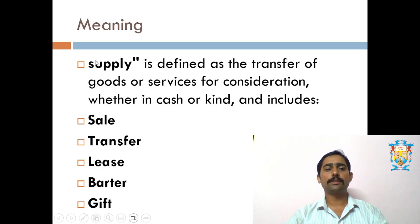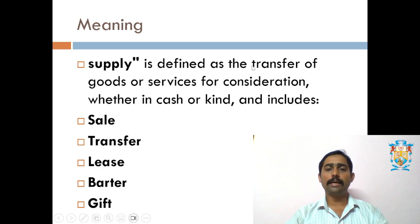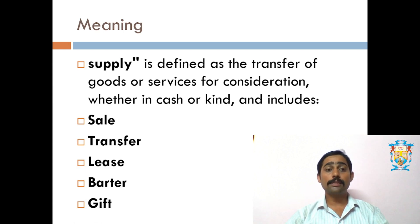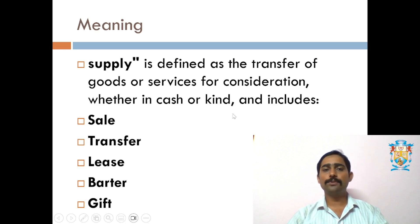Let us understand first what is supply. Supply is something on which the taxes will be paid under GST mechanism. Supply is defined as transfer of goods or services for a consideration, whether in cash or kind. Consideration means something in return — it may be cash or kind.